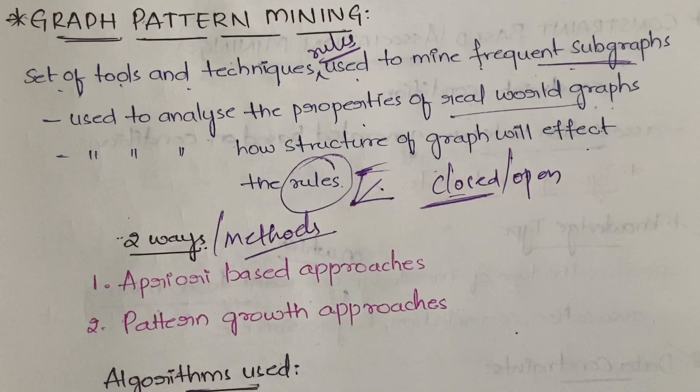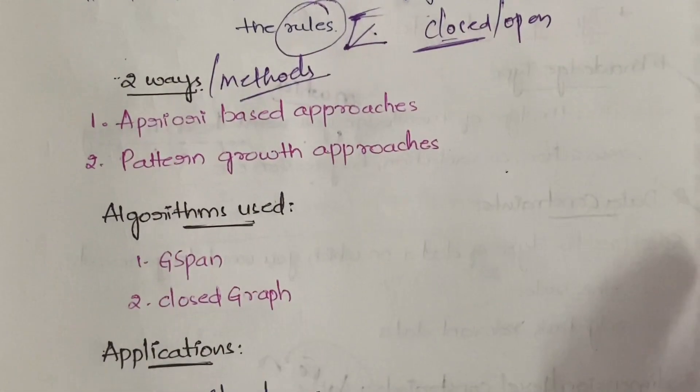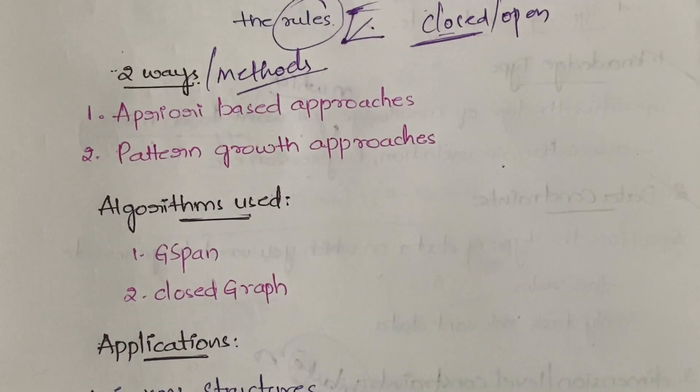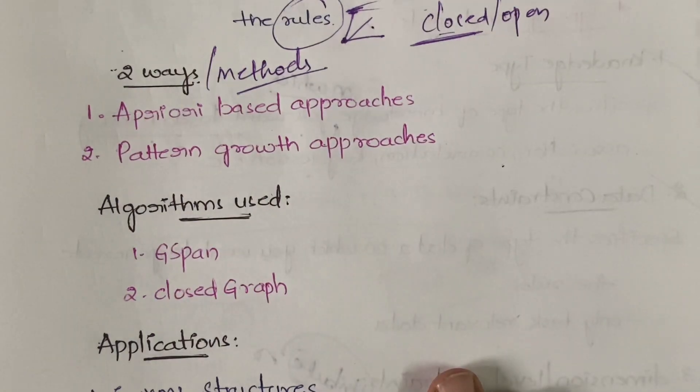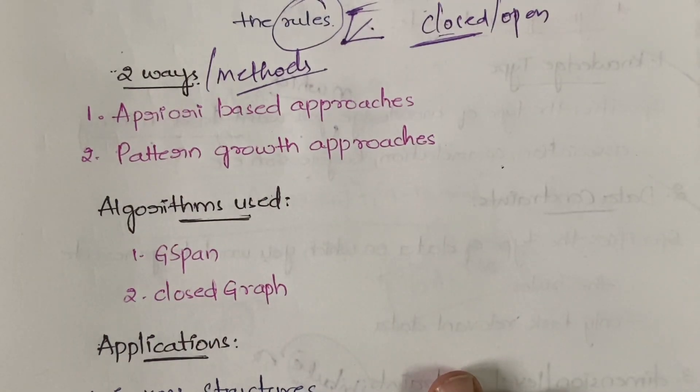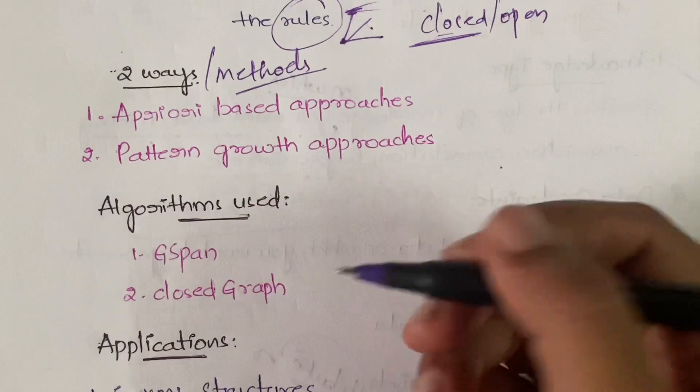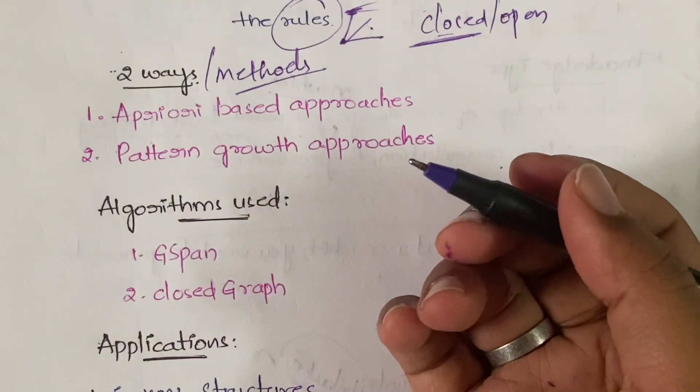What are the algorithms used? G-span and closed graph. Actually there are so many, but G-span and closed graph are the more frequently used ones. The working of G-span and closed graphs I'm not going to tell you in this video - if possible I'll make a separate video for this.